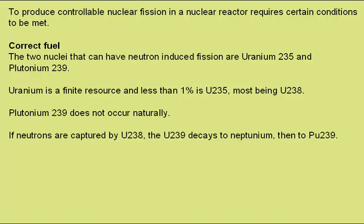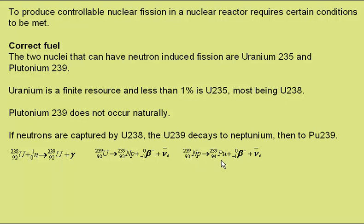Plutonium-239 does not occur naturally. However, if neutrons are captured by uranium-238, the uranium-239 produced decays to neptunium, then to plutonium-239. Uranium-238 absorbs a neutron becoming uranium-239 and a gamma ray. The uranium-239 then decays by beta decay to neptunium-239, emitting a beta-minus particle and an electron anti-neutrino. The neptunium then undergoes another beta-minus decay to become plutonium-239 and again an electron anti-neutrino.